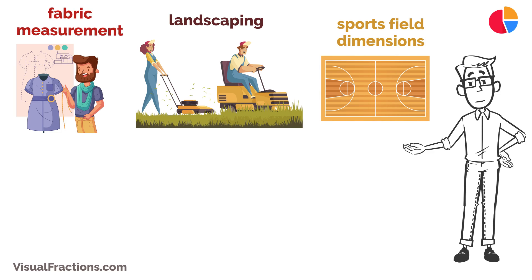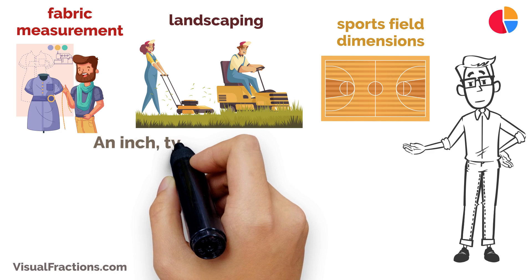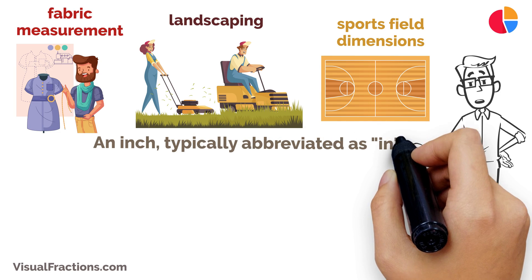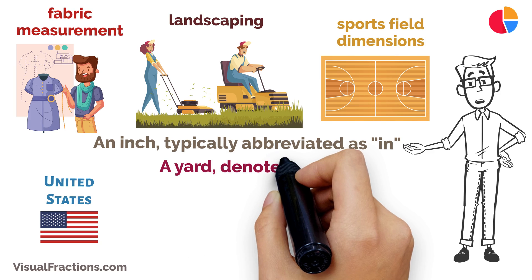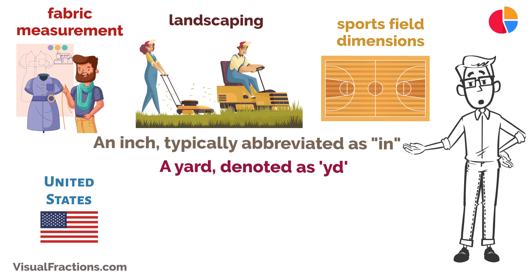Here's a bit of background. An inch, often abbreviated as in, is a unit of length in both the Imperial and United States customary systems. A yard, denoted as YD, is another unit of length in these systems, where one yard is equivalent to 36 inches.